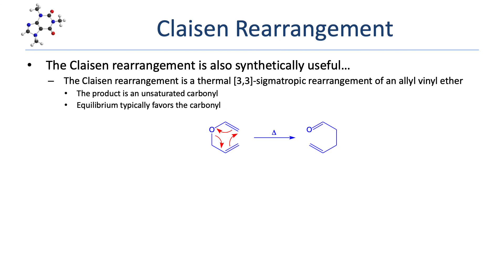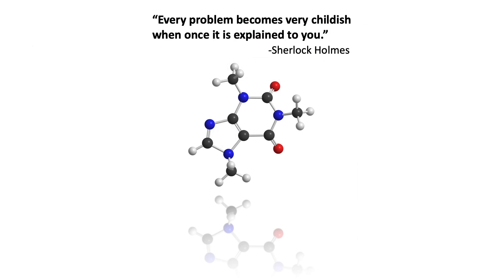The final sigmatropic rearrangement we'll explore is the Claisen rearrangement, not to be confused with the Claisen condensation. The Claisen rearrangement is a thermal 3,3-sigmatropic rearrangement of an allyl vinyl ether. The product is an unsaturated carbonyl, which is usually favored over the ether at equilibrium. Here we see a simple allyl vinyl ether undergo Claisen rearrangement to give 4-pentenal. We'll see you next time.